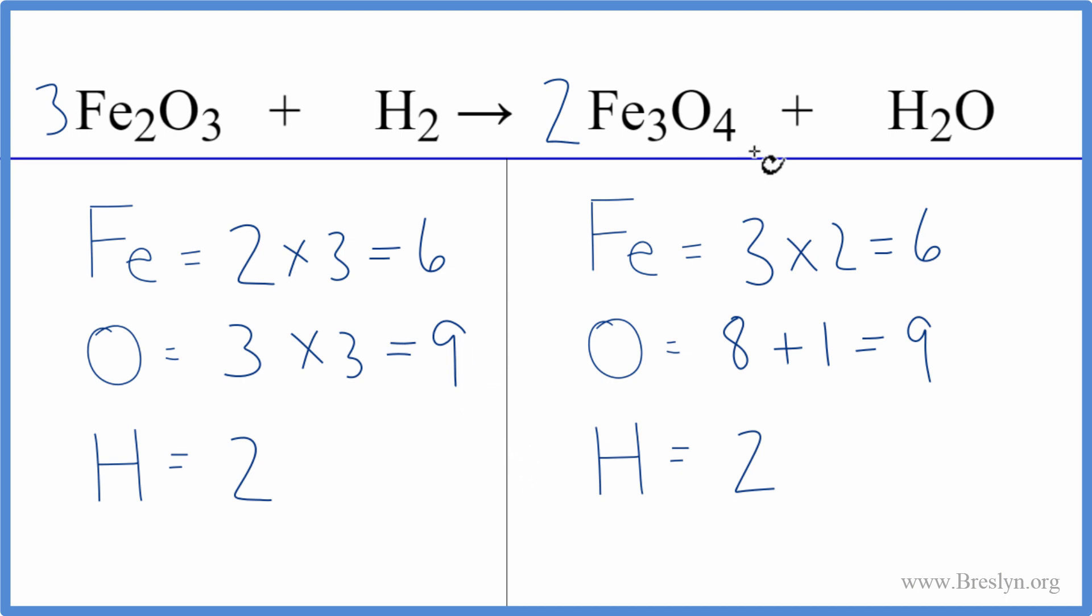If you had problems, it may be because you didn't count this last oxygen over here in the water on the product side. That's pretty common. And then when you have an odd number, it's sometimes helpful to try to get that to be an even number and things can kind of just fall into place.